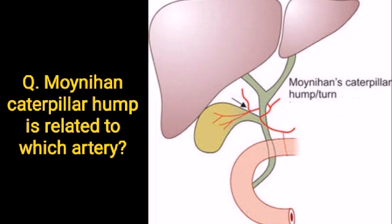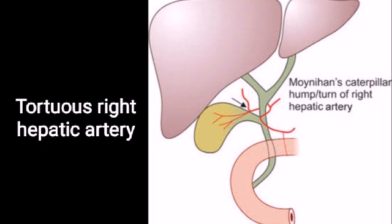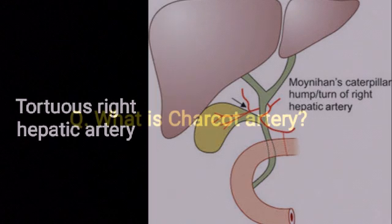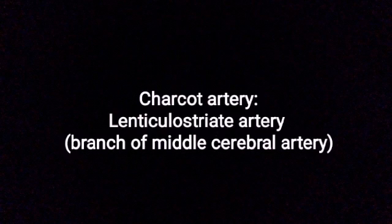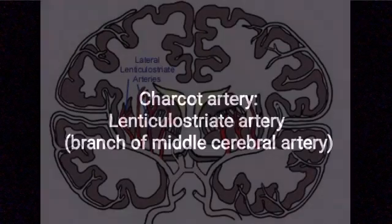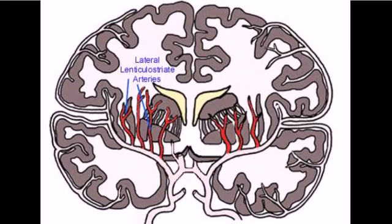Moynihan's caterpillar hump is related to which artery? Tortuous right hepatic artery. What is Charcot's artery? Charcot's artery is the lenticulostriate artery, which is a branch of the middle cerebral artery.